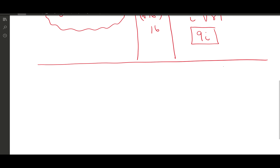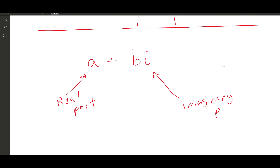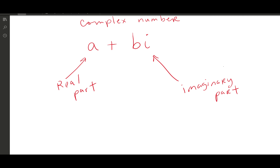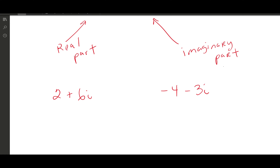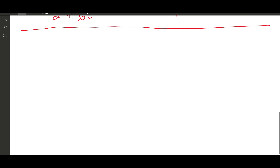Now let's look at complex numbers. A complex number is in the form a + bi, where a is the real part and bi is the imaginary part. Together they make a complex number. Examples include 2 + 6i or negative 4 minus 3i.